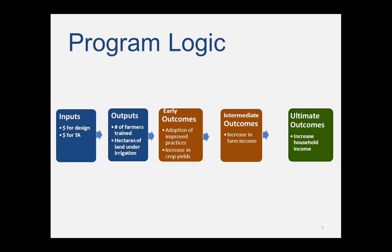When we look at this program logic in terms of how projects work, the first two boxes are project inputs — money spent — and outputs, such as farmers trained or hectares of land under cultivation. The program logic lays out how we expect these inputs and outputs to translate into outcomes. Some outcomes are triggered early, like adoption of new techniques, while others come later, like increases in crop yields. MCC tries to connect the dots to the ultimate outcomes we aim to achieve: increases in farm incomes and ultimately changes in household incomes.